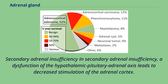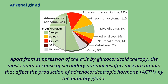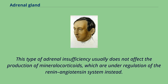In secondary adrenal insufficiency, a dysfunction of the hypothalamic-pituitary-adrenal axis leads to decreased stimulation of the adrenal cortex. Apart from suppression of the axis by glucocorticoid therapy, the most common cause of secondary adrenal insufficiency is tumors that affect the production of adrenocorticotropic hormone by the pituitary gland. This type of adrenal insufficiency usually does not affect the production of mineralocorticoids, which are under regulation of the renin-angiotensin system instead.